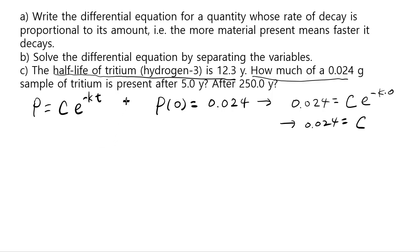And to figure out what k is, then we have to use this information which says half-life of tritium, it's hydrogen 3, is 12.3 years. So that means the amount after 12.3 years will be half of the initial, which is half of 0.024, which is 0.012.